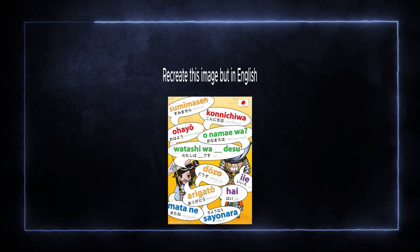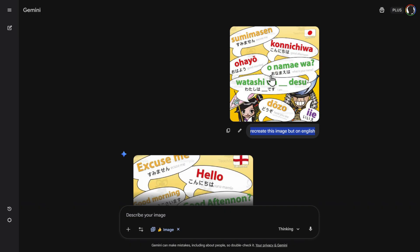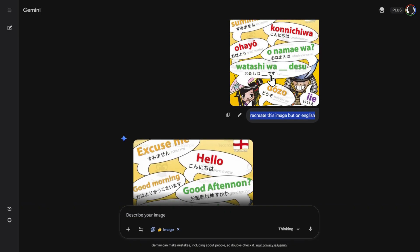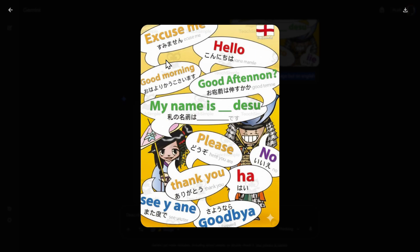Something more simple but very hard for AI image editors previously: recreating this image but in English. I don't know Japanese, but I think it did a good job. 'Excuse me. Hello. Good morning. Good afternoon. My name is Desu. Please.' Yes, I think it did a good job here.